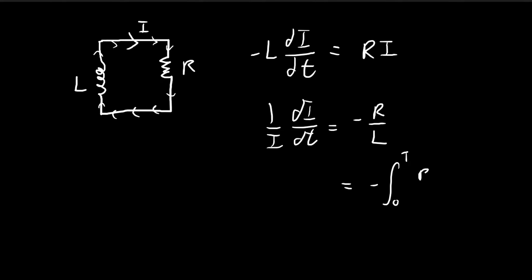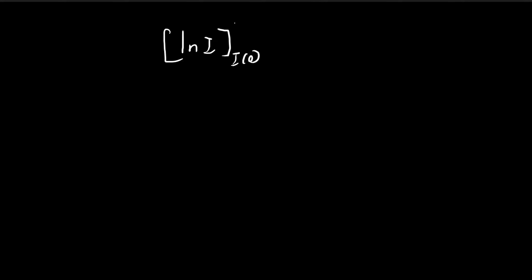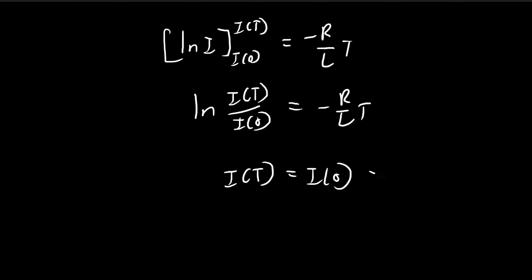All we have to do is integrate both sides, from zero to some capital T. The left-hand side is rather simple, and for the right-hand side we do a substitution in terms of i. The lower bound becomes i evaluated when t equals zero, all the way to i evaluated at t equals capital T. The integral on the left-hand side is just a natural log. Writing out the bounds, we put negative R over L. Once you substitute everything, this equals the natural log expression, and then raising both sides as a power of e, you get the exponential expression.